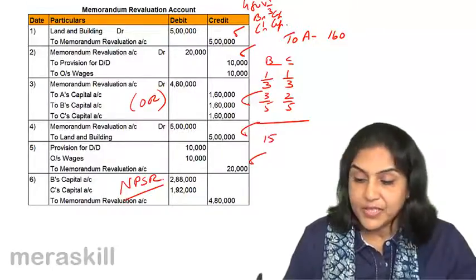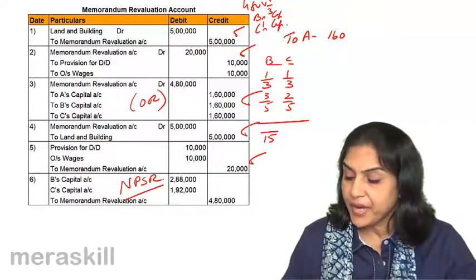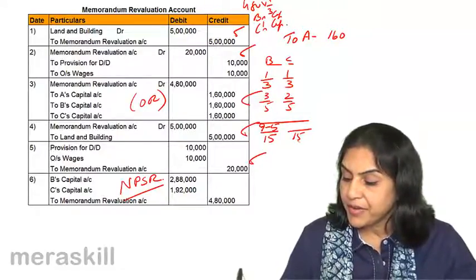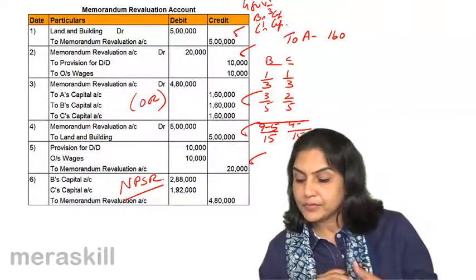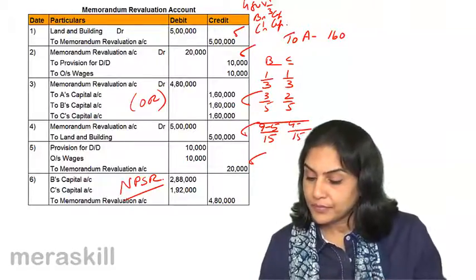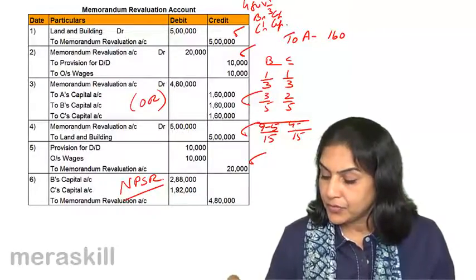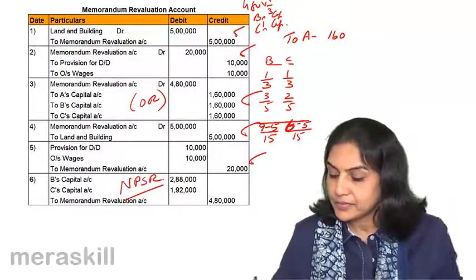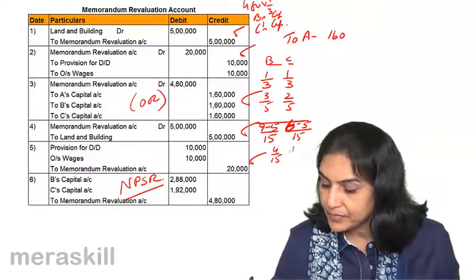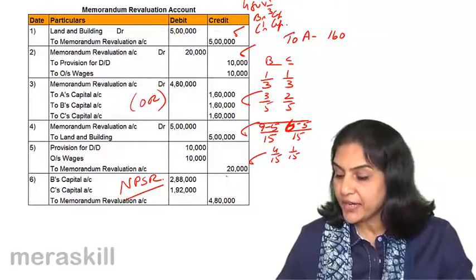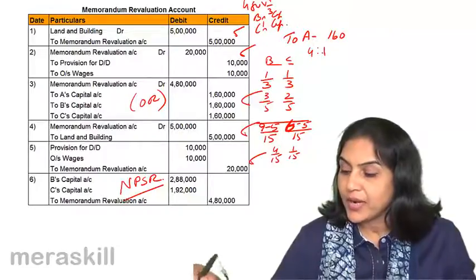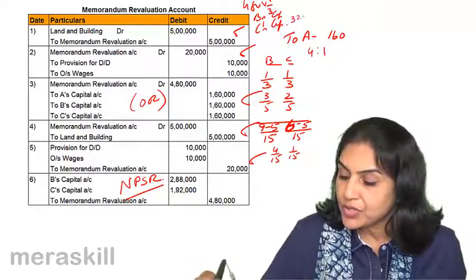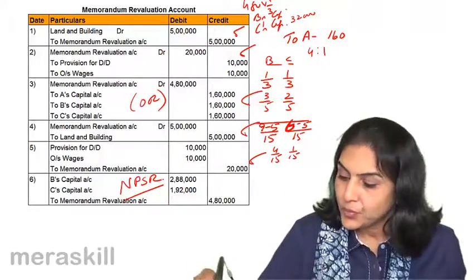What was the gain? B's gain: 3/5 minus 1/3 = 9/15 minus 5/15 = 4/15. C's gain: 2/5 minus 1/3 = 6/15 minus 5/15 = 1/15. Therefore the gaining ratio is 4:1. So 1,60,000 divided by 5 = 32,000; C's share is 32,000 and B's share is 1,28,000.